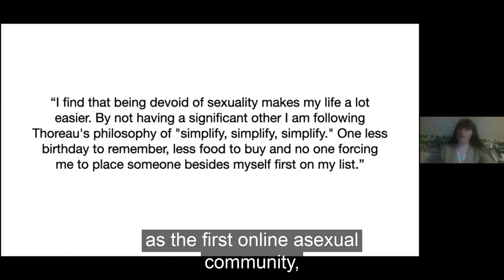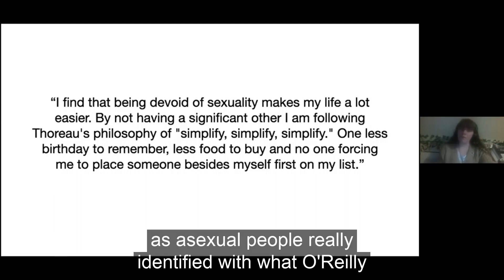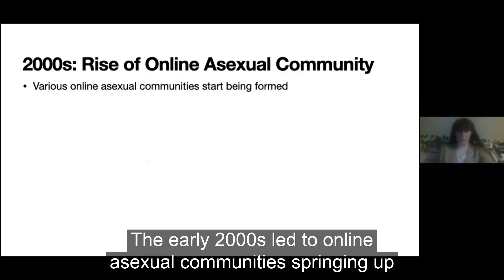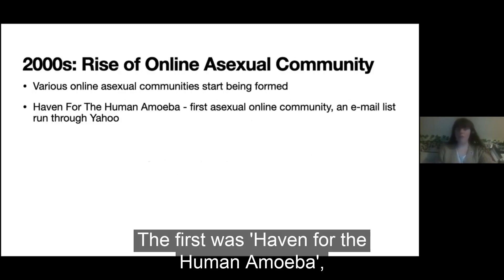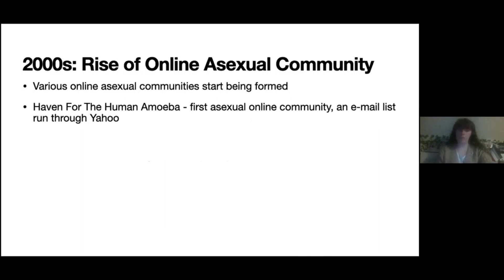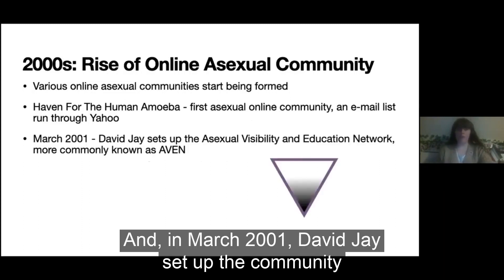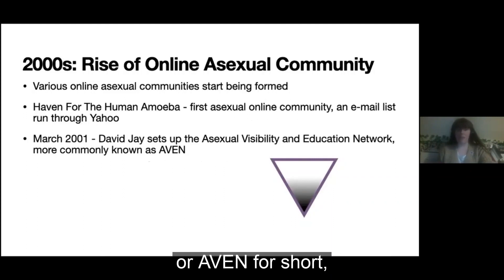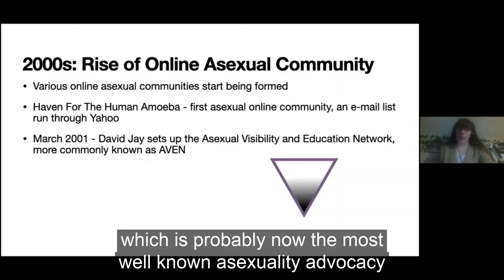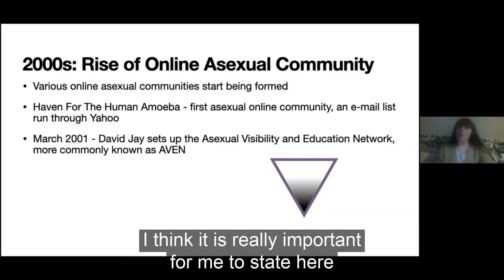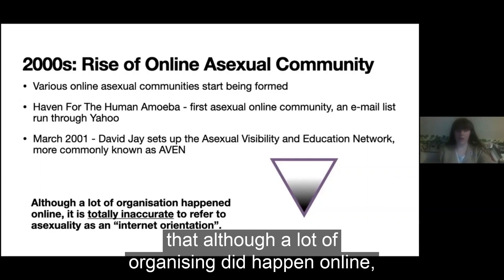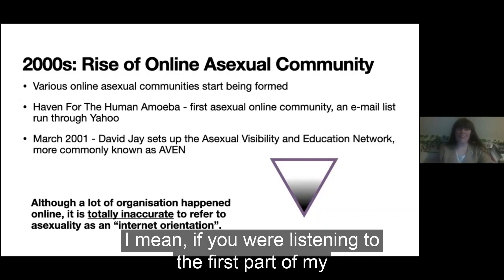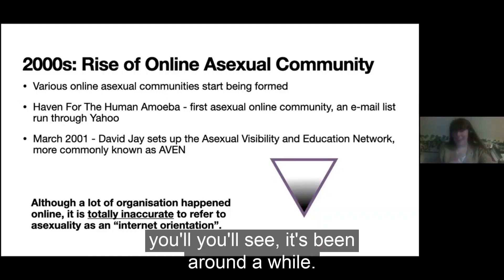This article led to what some regard as the first online asexual community, as asexual people really identified with what O'Reilly was saying. The early 2000s led to online asexual communities springing up and becoming more common. The first was Haven for the Human Amoeba, an email list run through Yahoo. And in March 2001, David Jay set up the community now more commonly known as the Asexual Visibility and Education Network, or AVEN for short, which is probably now the most well-known asexuality advocacy group. It is totally inaccurate to state that asexuality is an internet orientation — as you'll see from the first part of this presentation, it's been around a while.